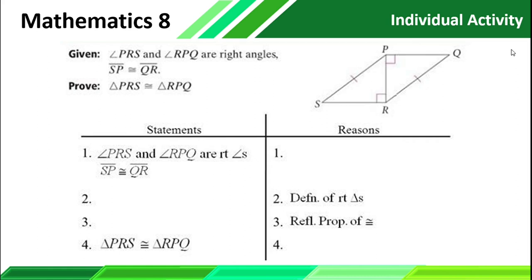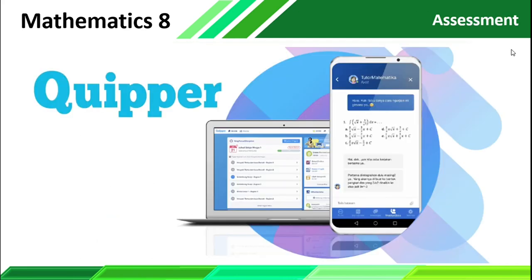Here are the answers on our previous exercises. For number one, the answer is 'given.' For number two, triangle PRS and triangle RPU are right triangles. For number three, PR is congruent to RP. And for number four, the HL theorem. I hope you really understand our lesson for today. This will be the last topic for our term exam. Do not forget to access your paper accounts for a short assessment. Thank you and God bless you all.